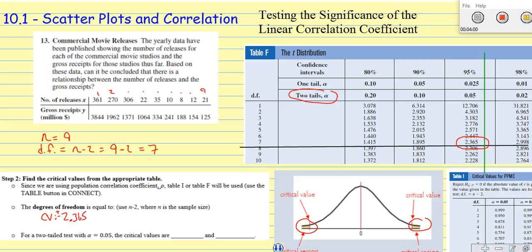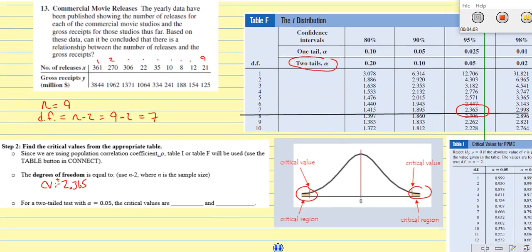Now if I did use table I, it works exactly the same way. I come across my degrees of freedom. This is only a two-tailed test, it doesn't do one-tailed. I come down from 0.05 and I get a critical value of 0.666, and that's positive or negative also.